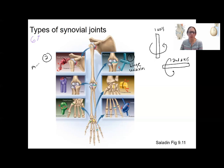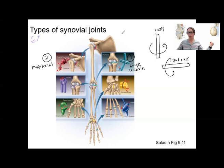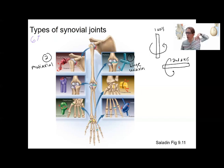Then there are joints that can move in lots of axes — these are multiaxial joints. Your shoulder and your hip can move around many different planes: here's one, here's another, here's another. Ball and socket is pretty intuitive — it's just super mobile, moving in multiple axes.